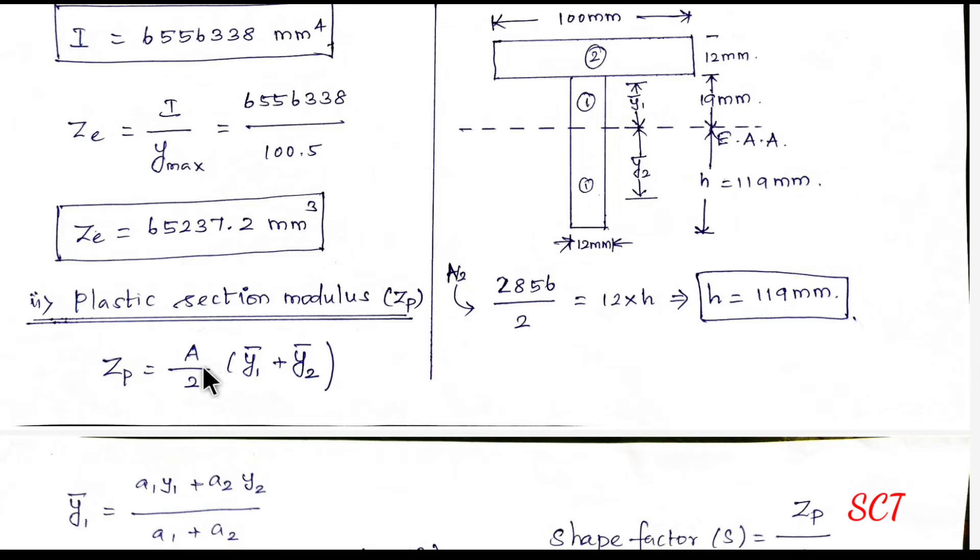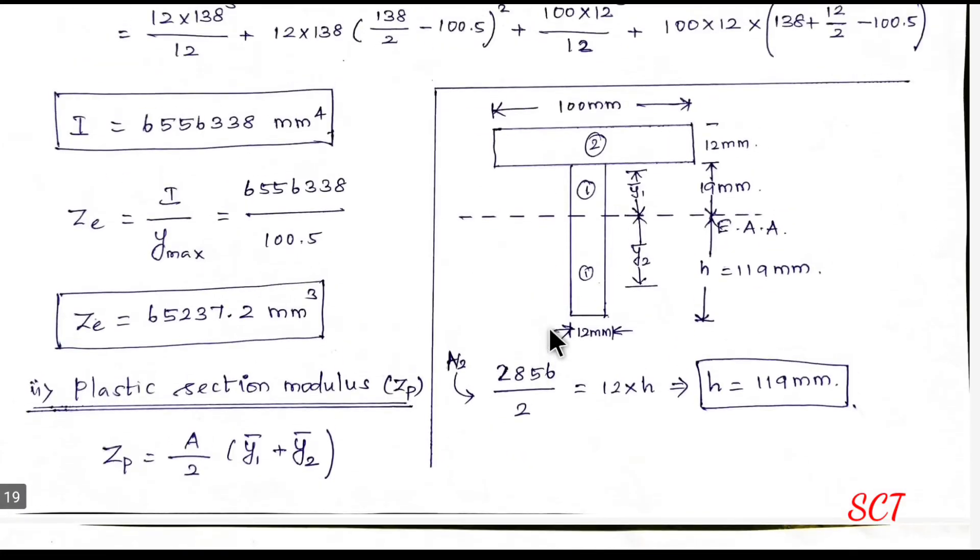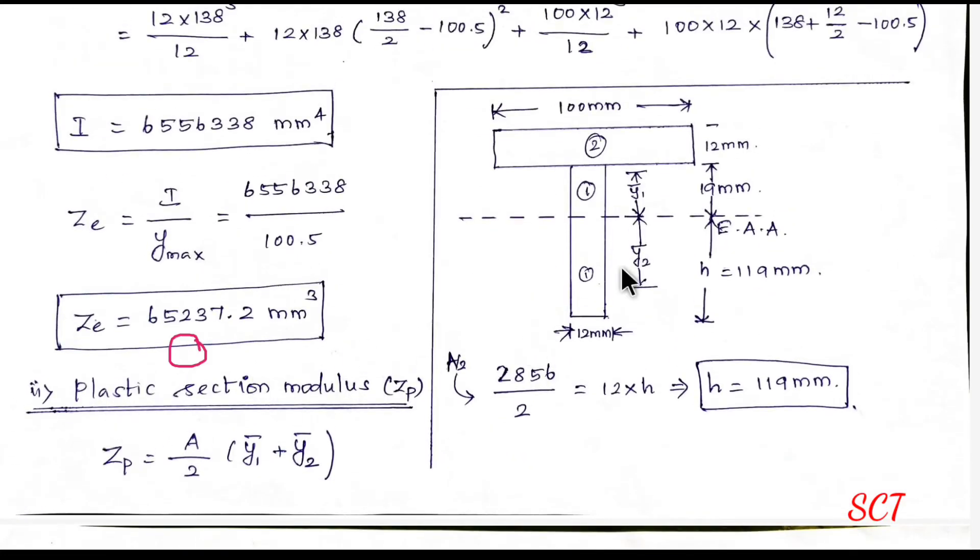Plastic section modulus formula, area by 2, open bracket, y1 bar plus y2 bar, close bracket. So, we can calculate the total area already, and we can substitute the total area. So, we can calculate the y1 bar and y2 bar. So, we can explain the y1 bar and y2 bar in the formula page. So, let's try the introduction, video path.